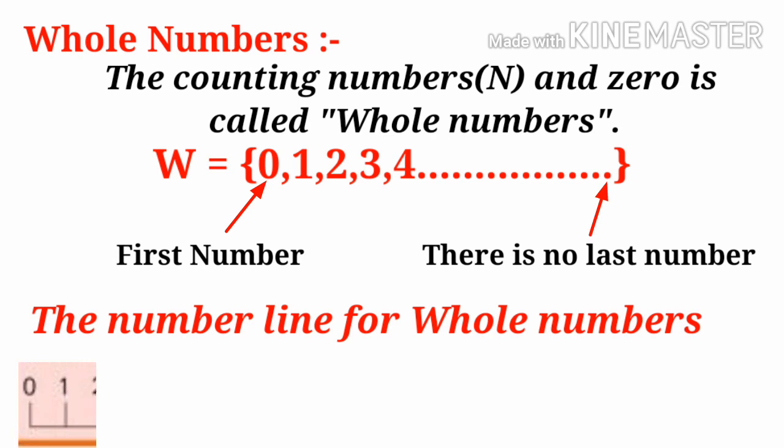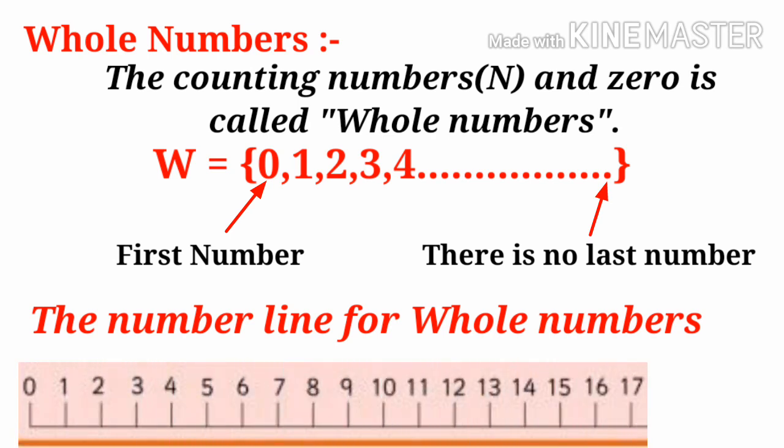Let us draw the number line for whole numbers. From 0, 1, 2, and so on. Observe here that 1, 2, 3, and so on are natural numbers. So all natural numbers are whole numbers, but all whole numbers are not natural numbers. So this is all about introduction to whole numbers.